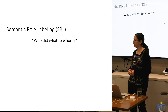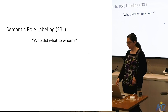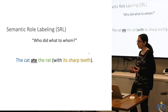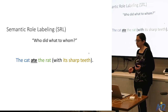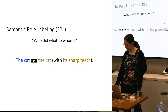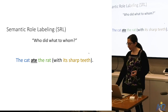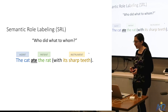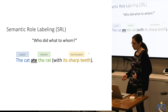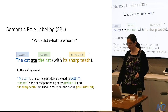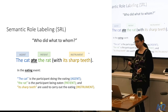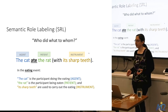Moving to semantic proto-role labeling: returning to the example 'the cat ate the rat,' the NLP task of semantic role labeling helps answer who is doing what to whom. In SRL, we assign abstract categorical role types to each participant in an event — agent, patient, or instrument. The cat would be labeled agent (doing the eating), the rat would be the patient (being eaten), and so forth.